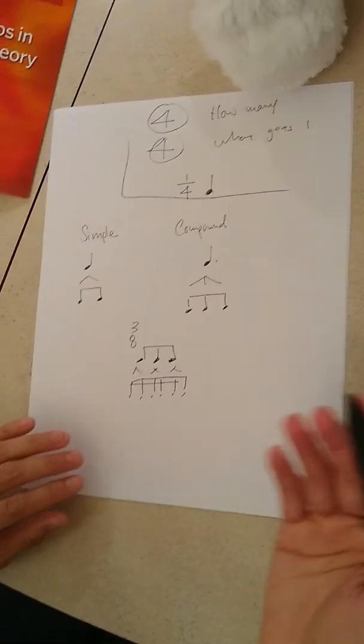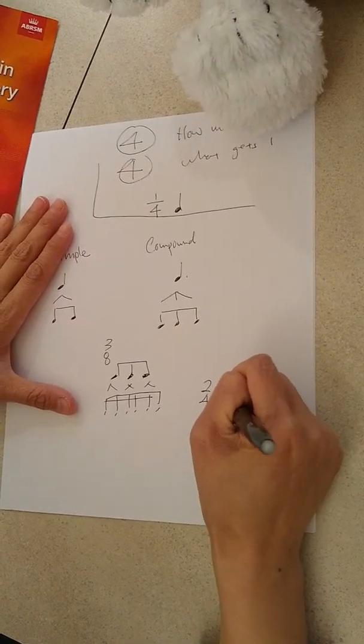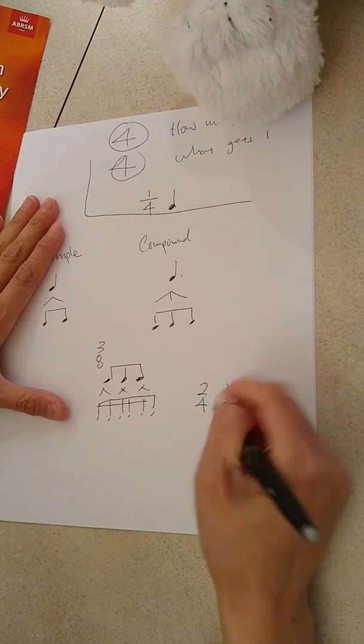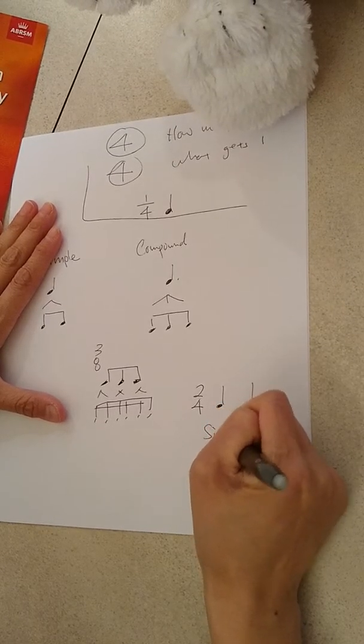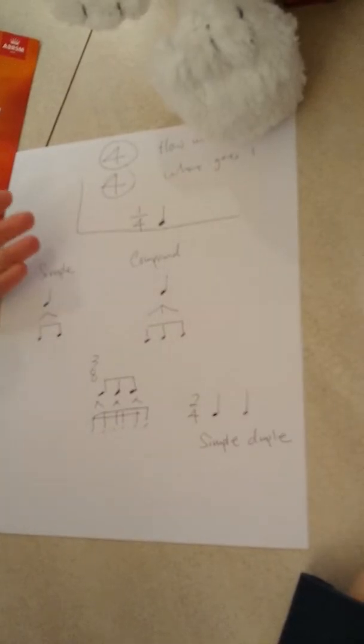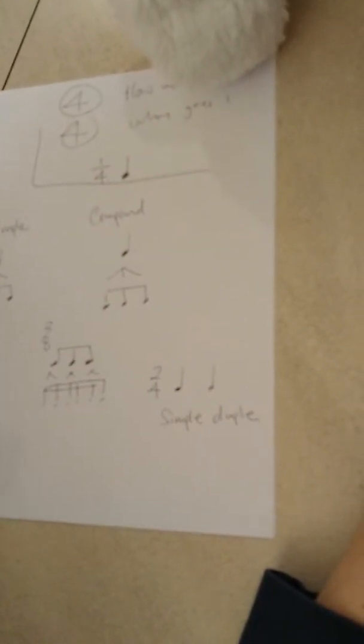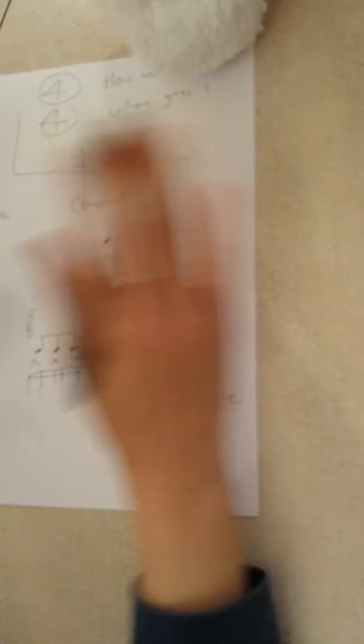Then it just depends on how many you have. If it's two four, we call it simple because it's simple meter. And it's duple because there are two of them. And then three four will be simple triple. Four four will be simple quadruple. Ta-da! That's all done.